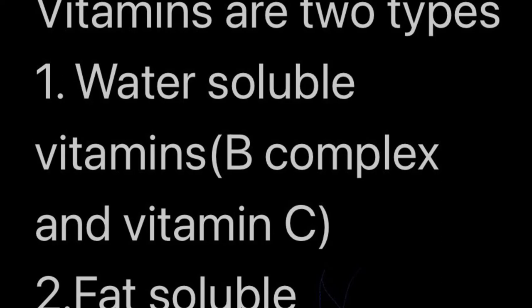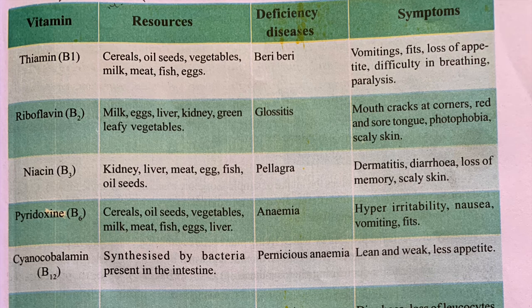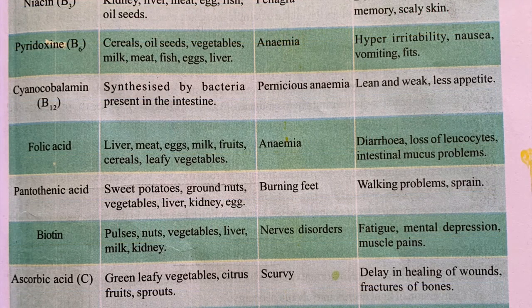The fat-soluble vitamins are A, D, E, and K. Vitamin B complex consists of B1, B2, B3, B6, and B12, folic acid, pantothenic acid, and biotin. These are the B complex vitamins.